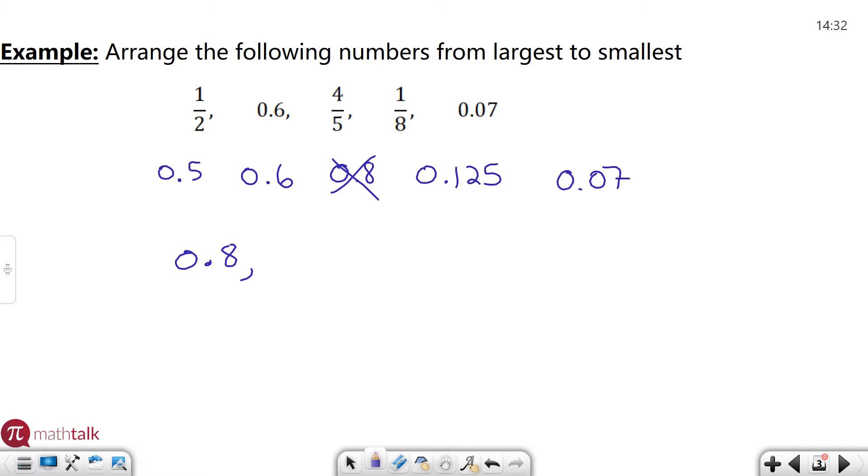I'm going to cross it out, just so I know that I'm done with it. The next one's going to be 0.6. Going down from there we have 0.5, and then the next one's going to be 0.125, and the last one 0.07.